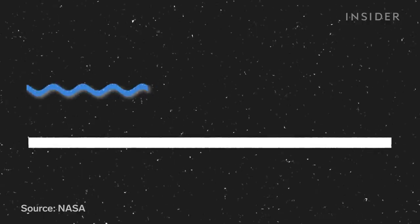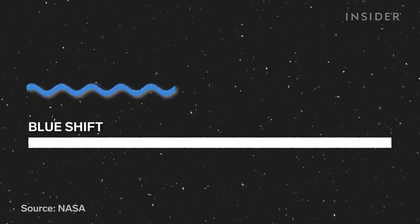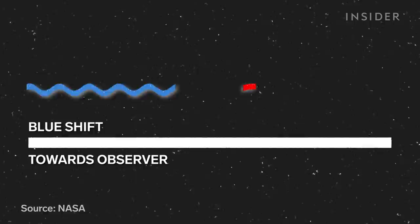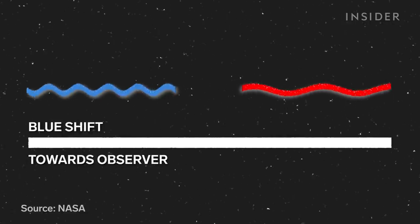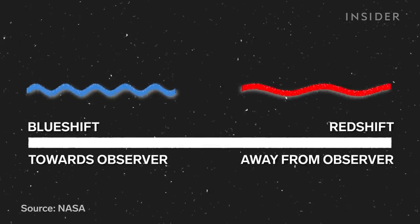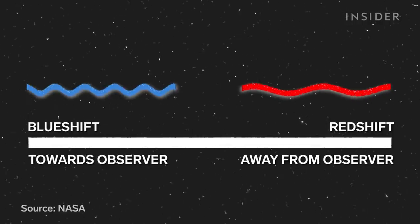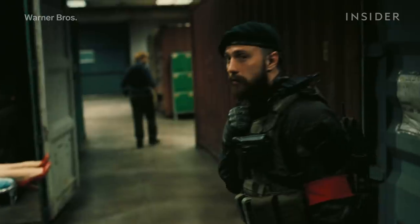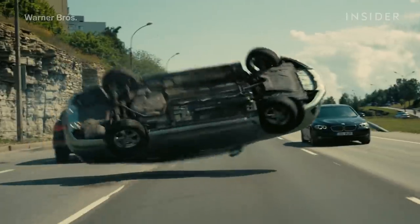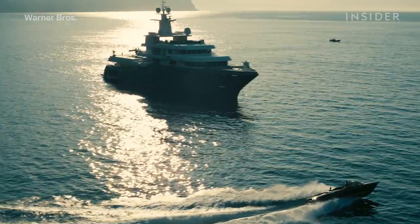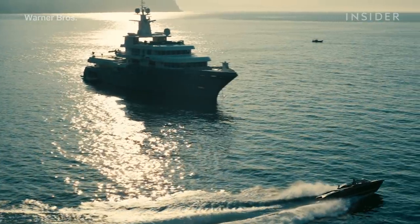Electromagnetic waves experience blue shift, caused by the movement of a source towards the observer, and at the opposite end of the spectrum, red shift, caused by the movement of a source away from the observer. Neil and the protagonist, along with Aaron Taylor-Johnson's Ives, need to retrieve the algorithm before Sator, played by Kenneth Branagh, kills himself on his yacht in Vietnam.